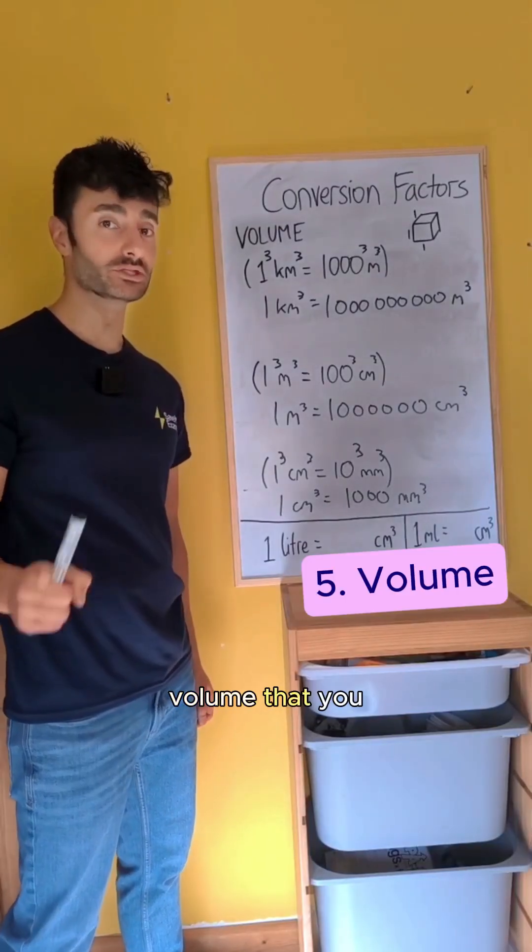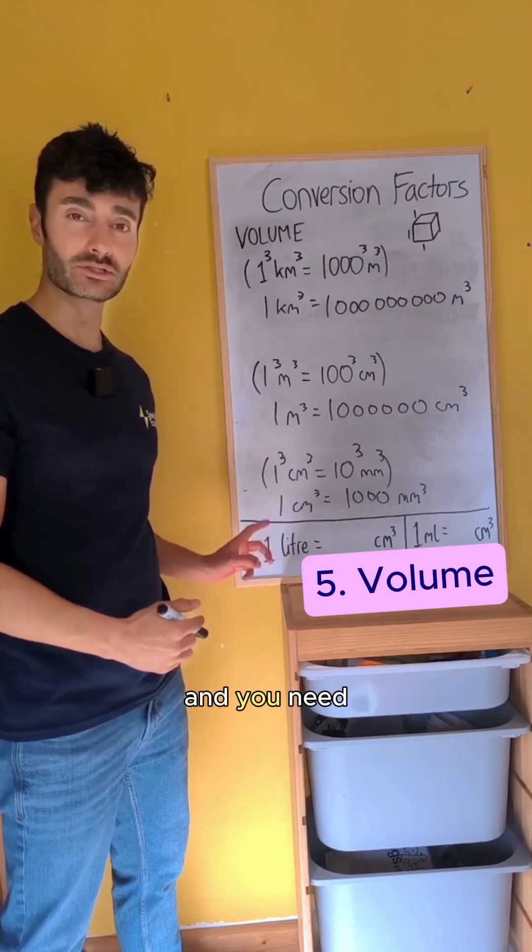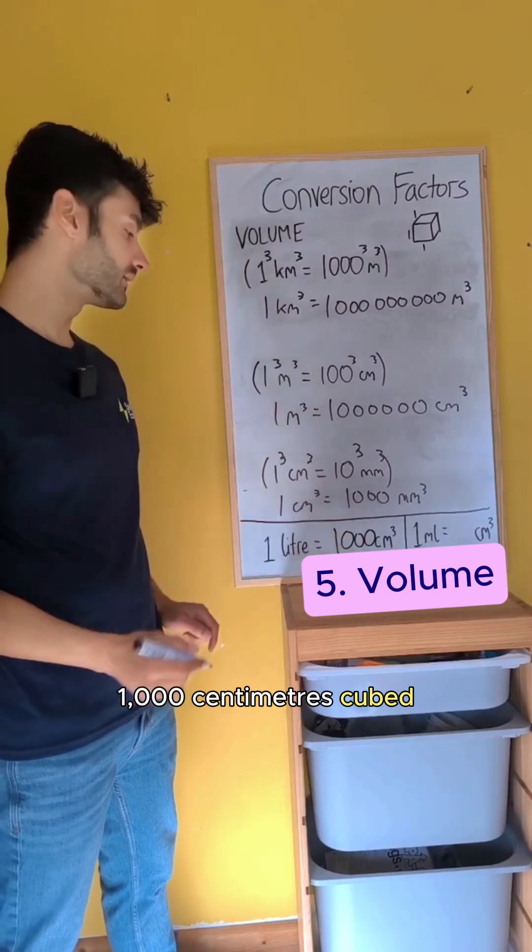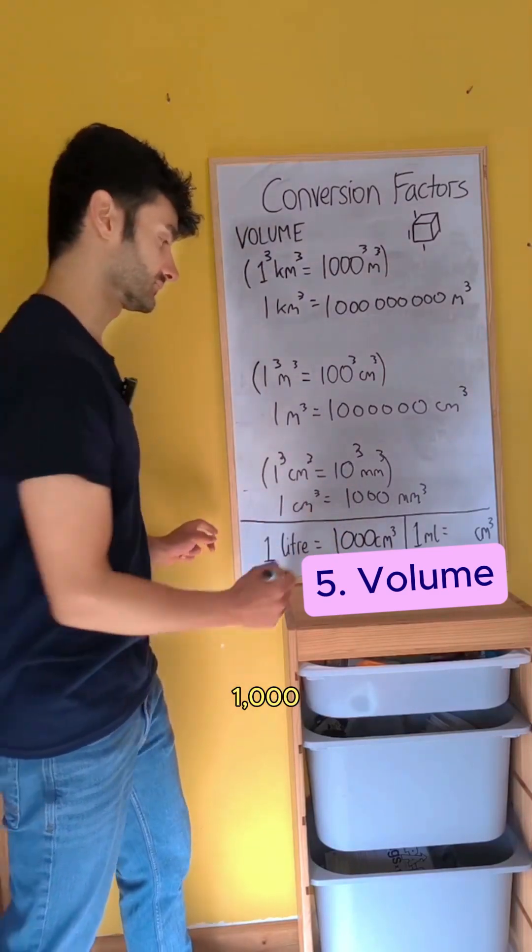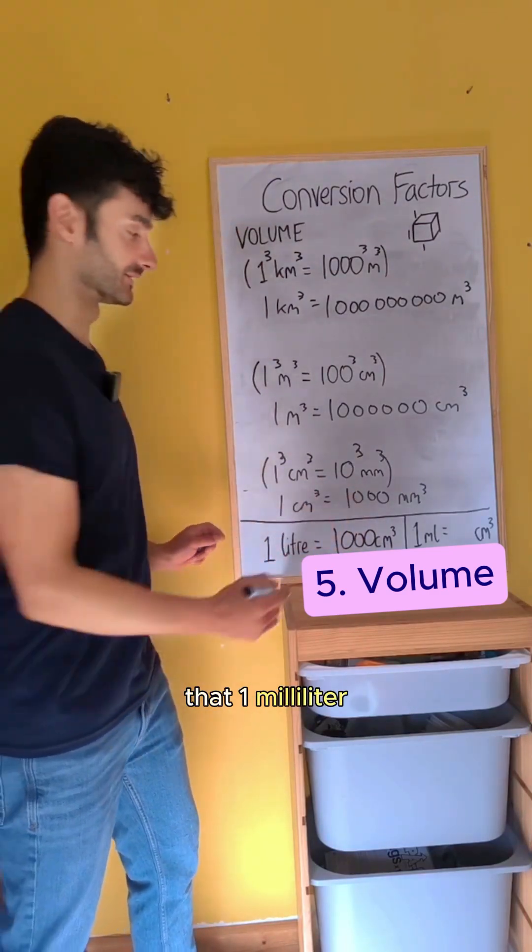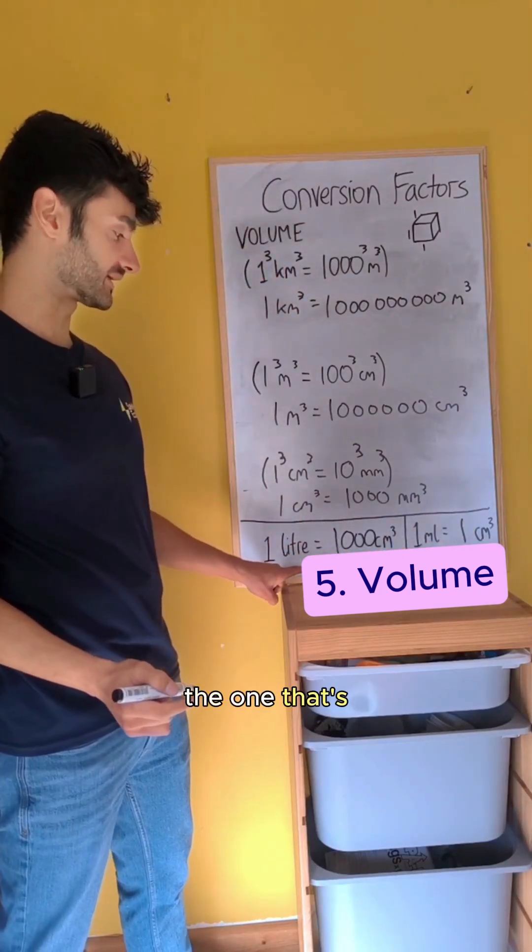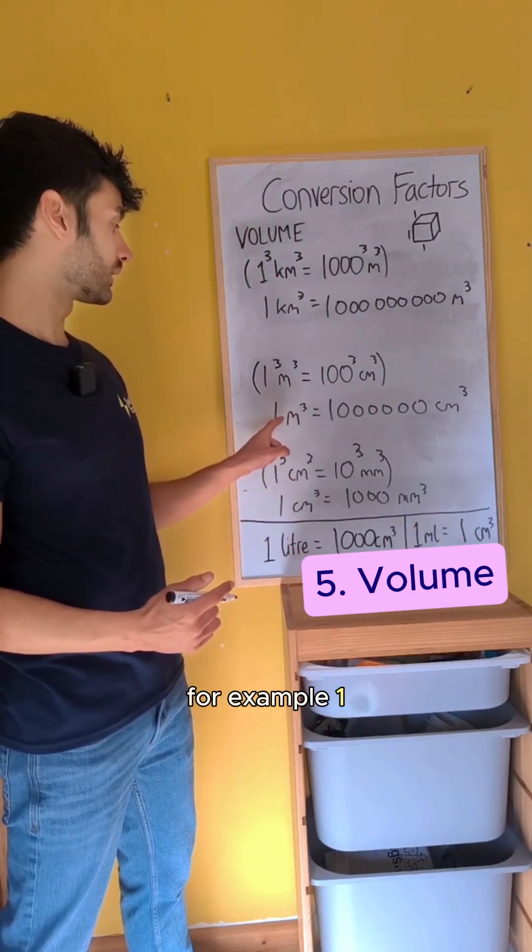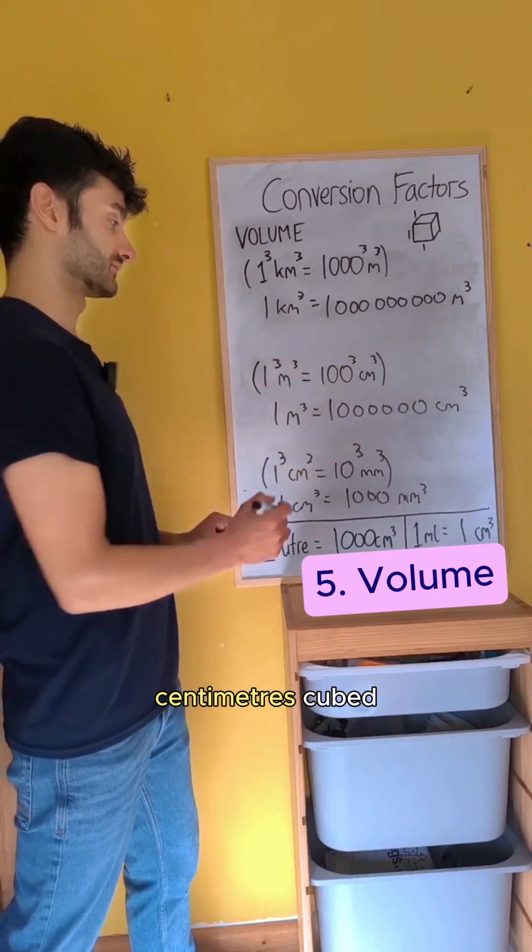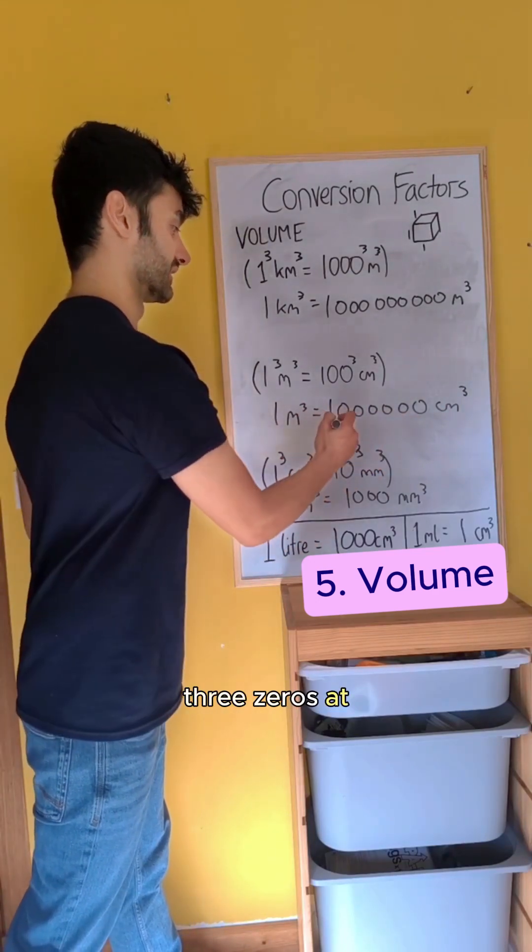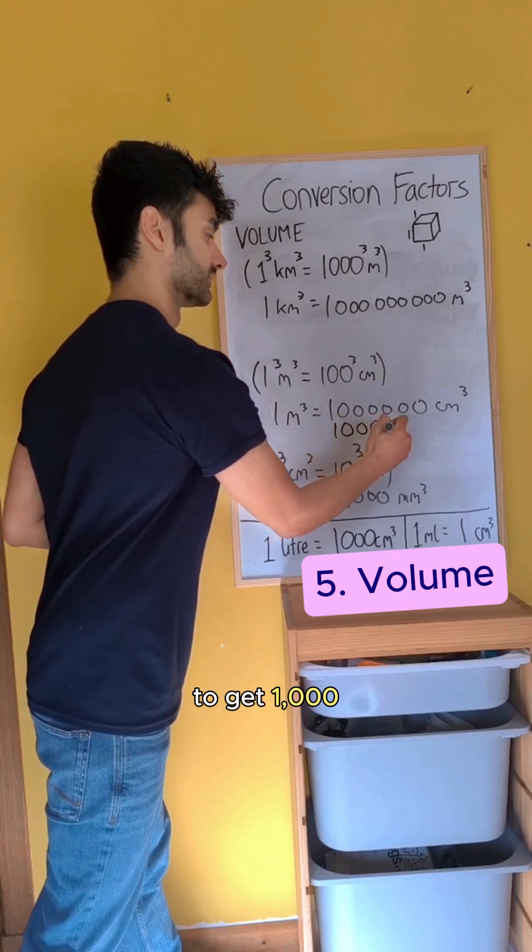Another unit of volume that you need to know are liters, and you need to know that one liter is a thousand centimeters cubed. If you divide both sides by a thousand, that tells you that one milliliter is just one centimeter cubed. But this is the one that's helpful. For example, one meter cubed in centimeters cubed, if you want to change it into liters, you're going to have to take away three zeros at the end to get a thousand liters.